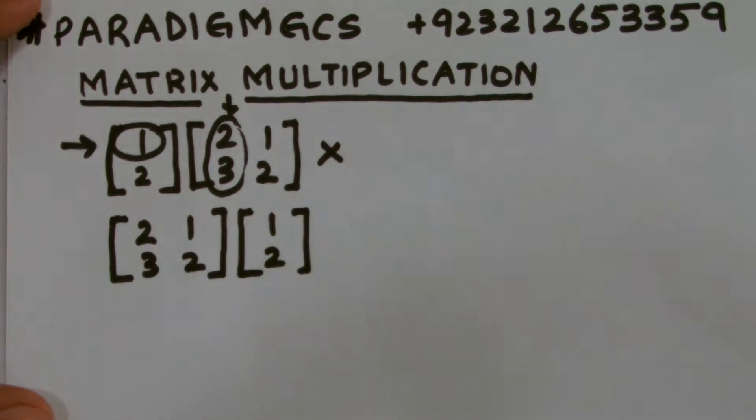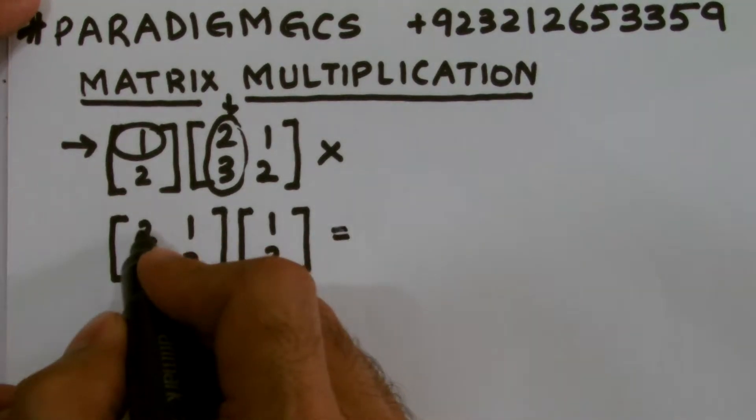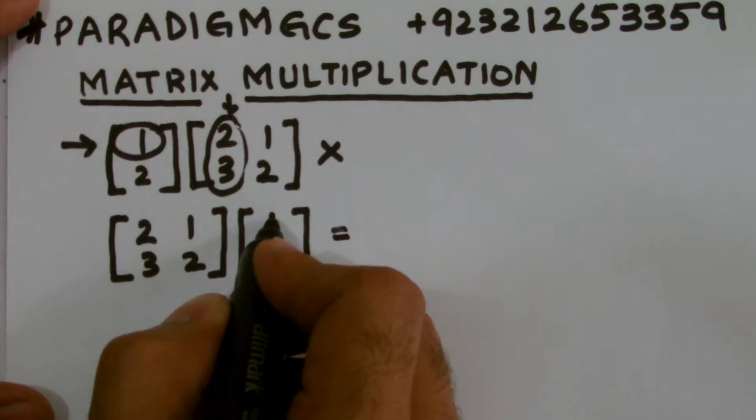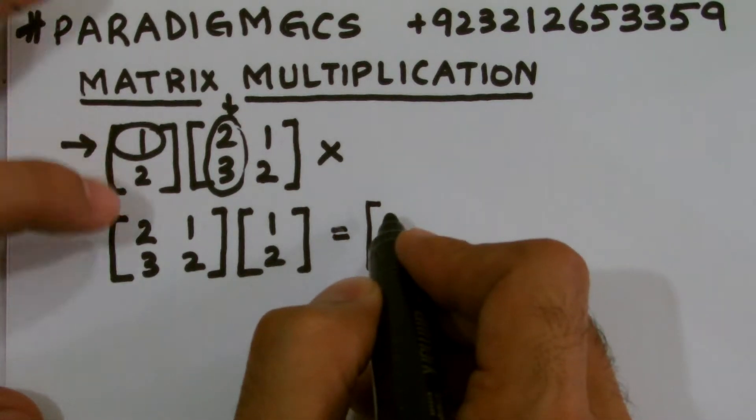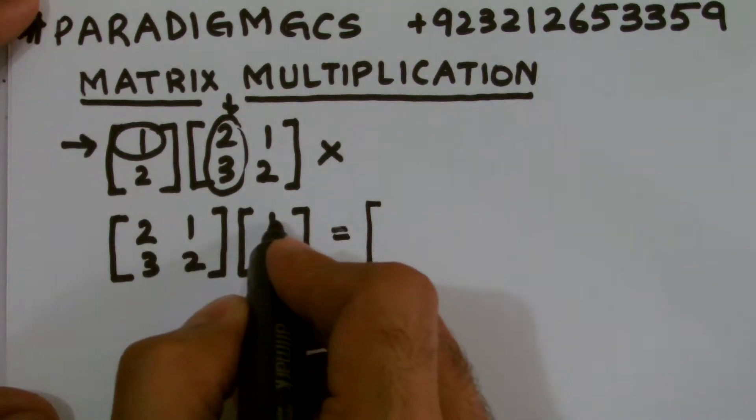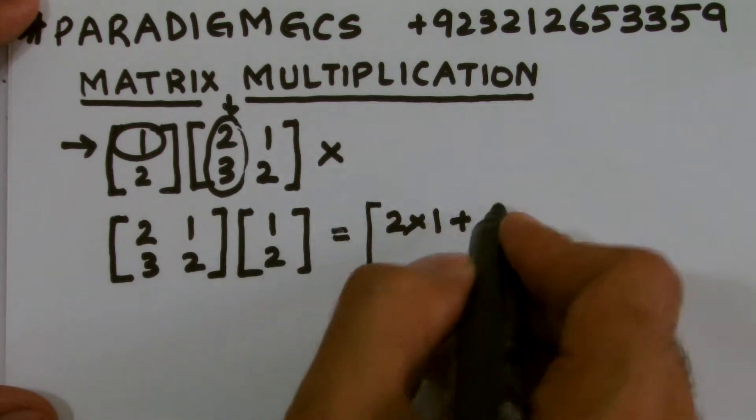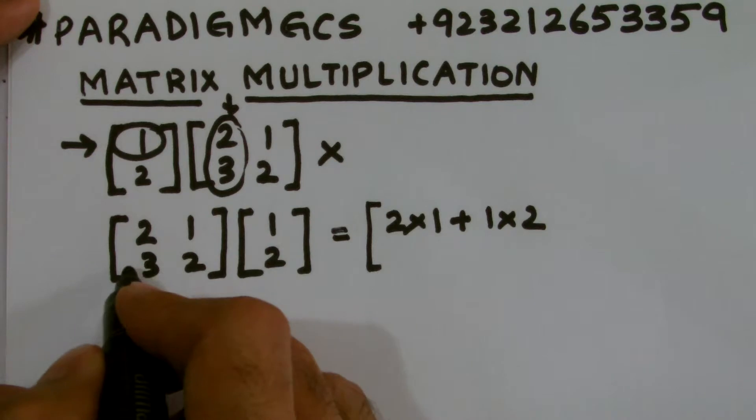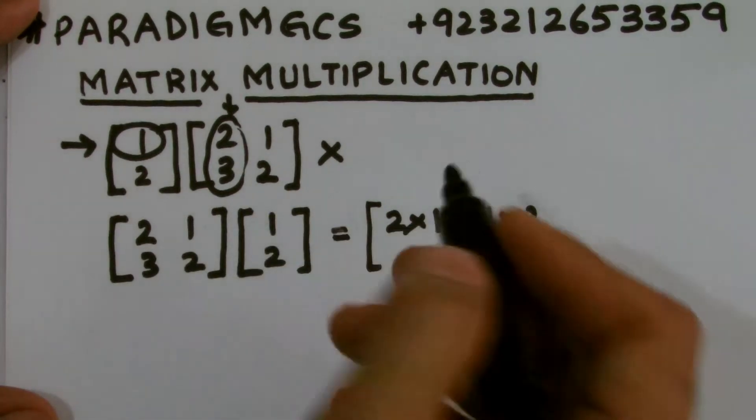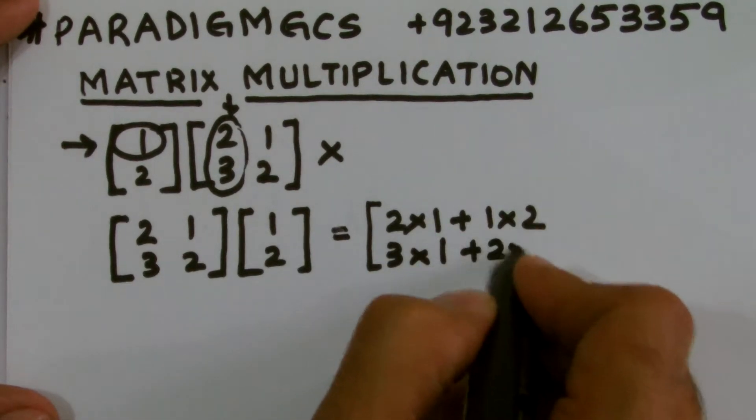So when this gets possible, we can simply multiply this by multiplying this 2 with 1 and 1 with 2. Now, just look at this multiplication step. I am multiplying this first element 2 with the first element of column, so 2 into 1. We will use a plus sign, 1 multiplied by 2, then we will take the second row, that is to be multiplied with the first column, I mean the only column. So we have 3 multiplied by 1 plus 2 multiplied by 2.